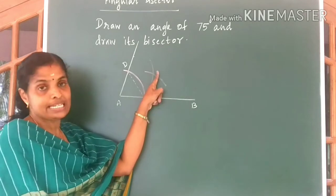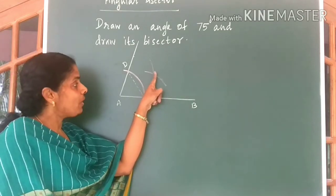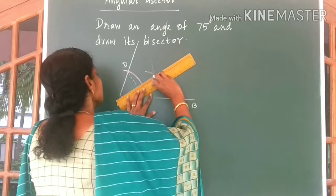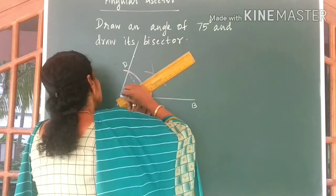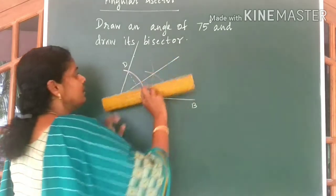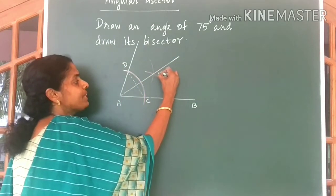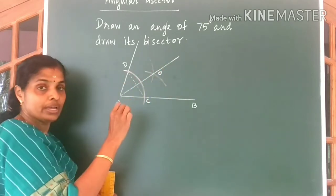The two arcs will meet at a point. Now join this point to A. Now I have joined this point. Let me name that point as O.